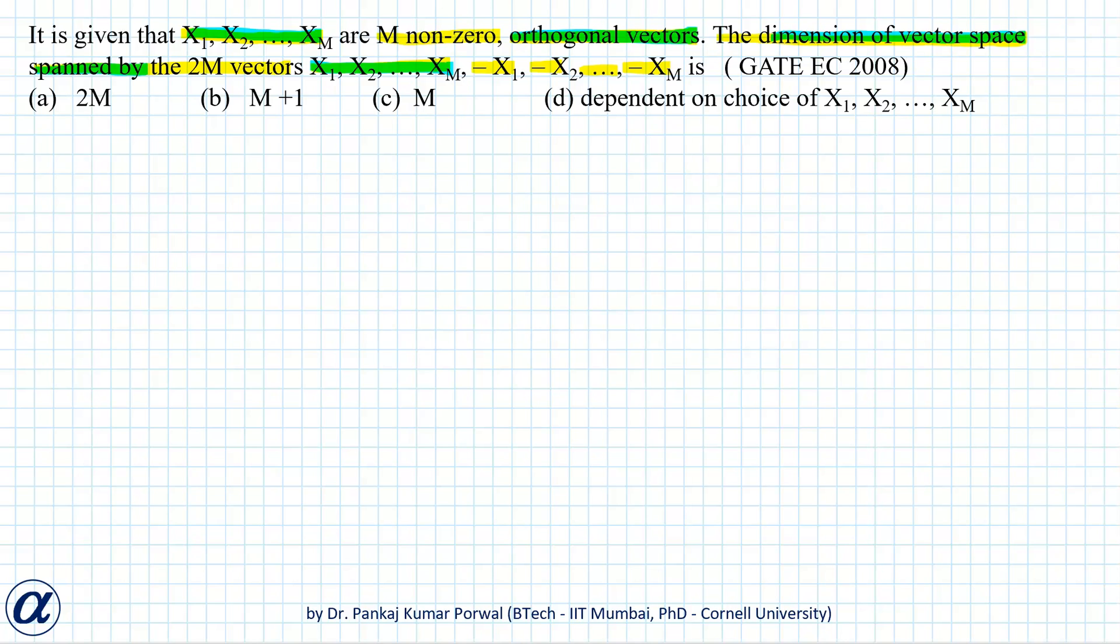The remaining m vectors, that is -x1, -x2, ..., -xm, can be written as linear combinations of x1, x2, ..., xm.